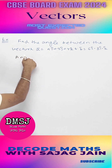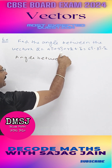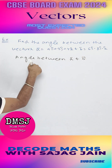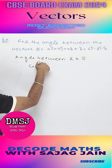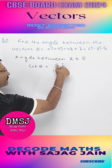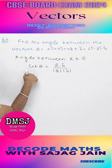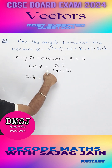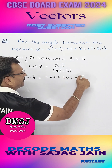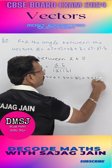The angle between a and b is given by cos theta equal to a dot b divided by modulus of a into modulus of b. Now a dot b is 5 into 6 plus 3 into minus 8 plus 4 into minus 1.